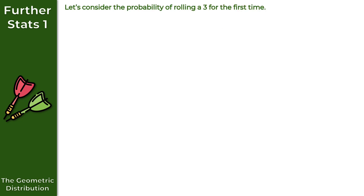To illustrate how probabilities work for the geometric distribution, let's consider the probability of rolling a three for the first time with a fair dice. The probability that x equals one is simply 1/6 — on the very first roll we get a three. For the probability that x equals two, we have two rolls: on the first roll we don't get a three (probability 5/6), but on the second roll we do, so P(x=2) = 5/6 × 1/6.